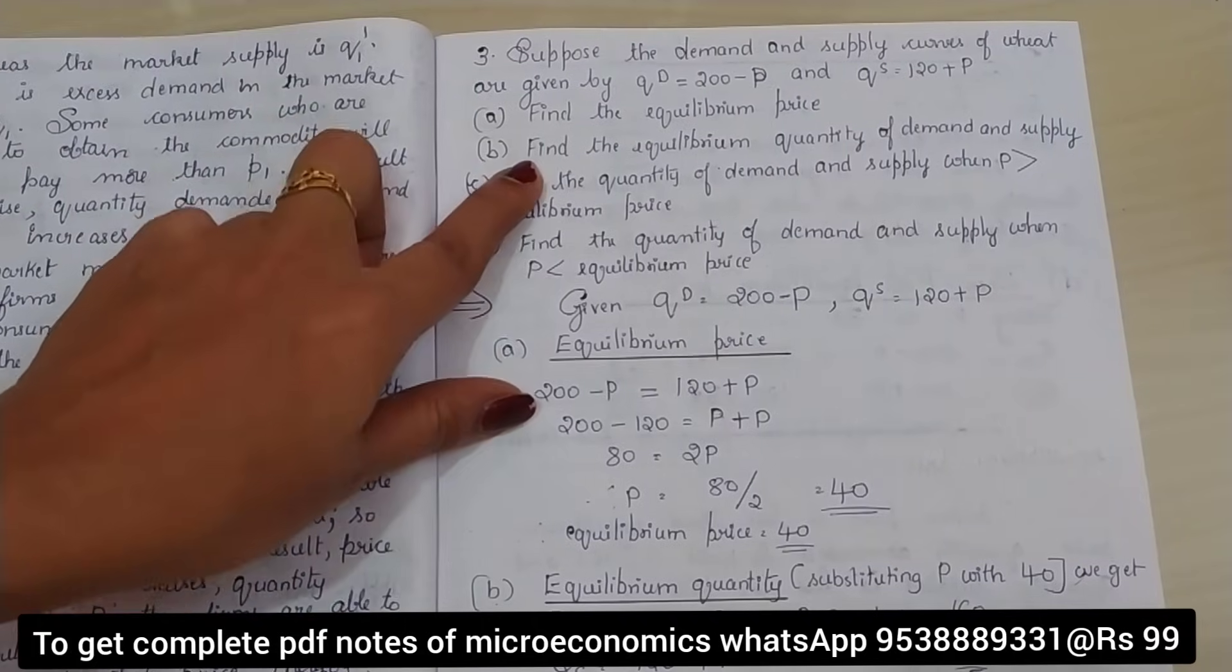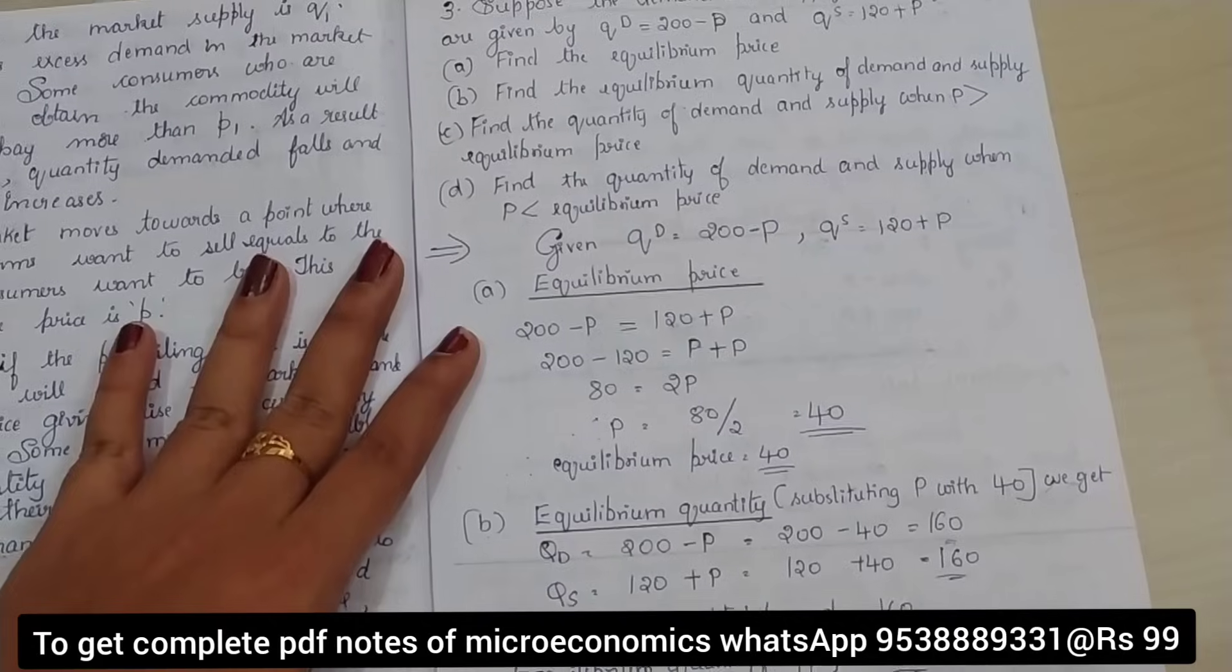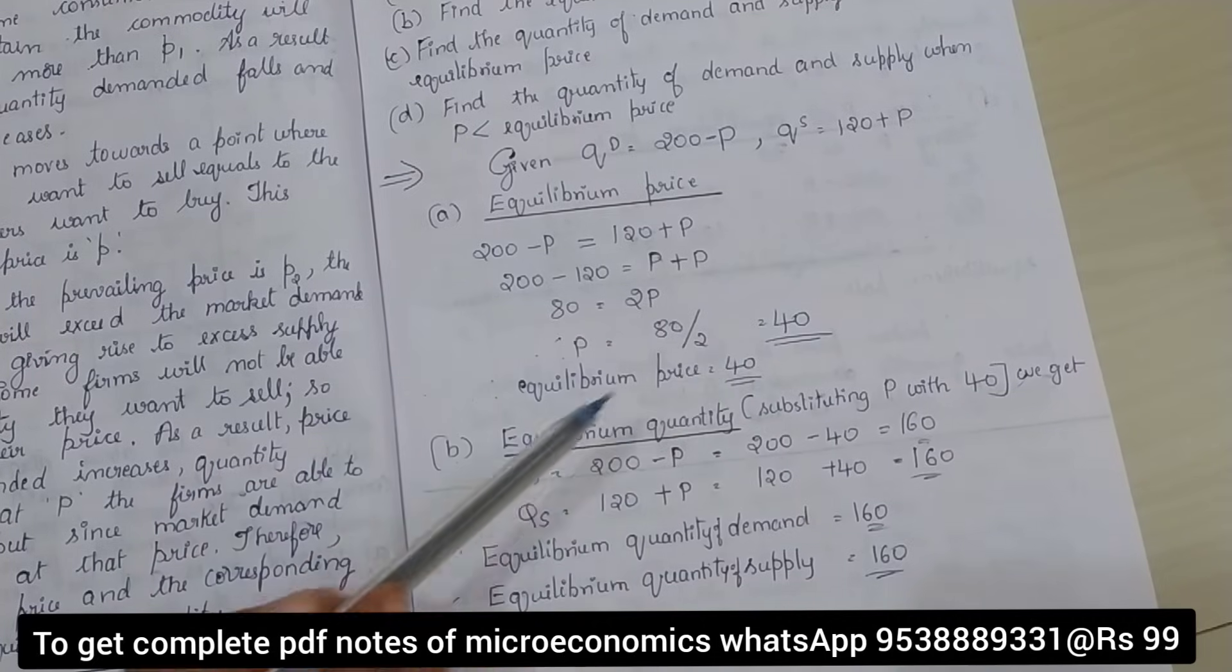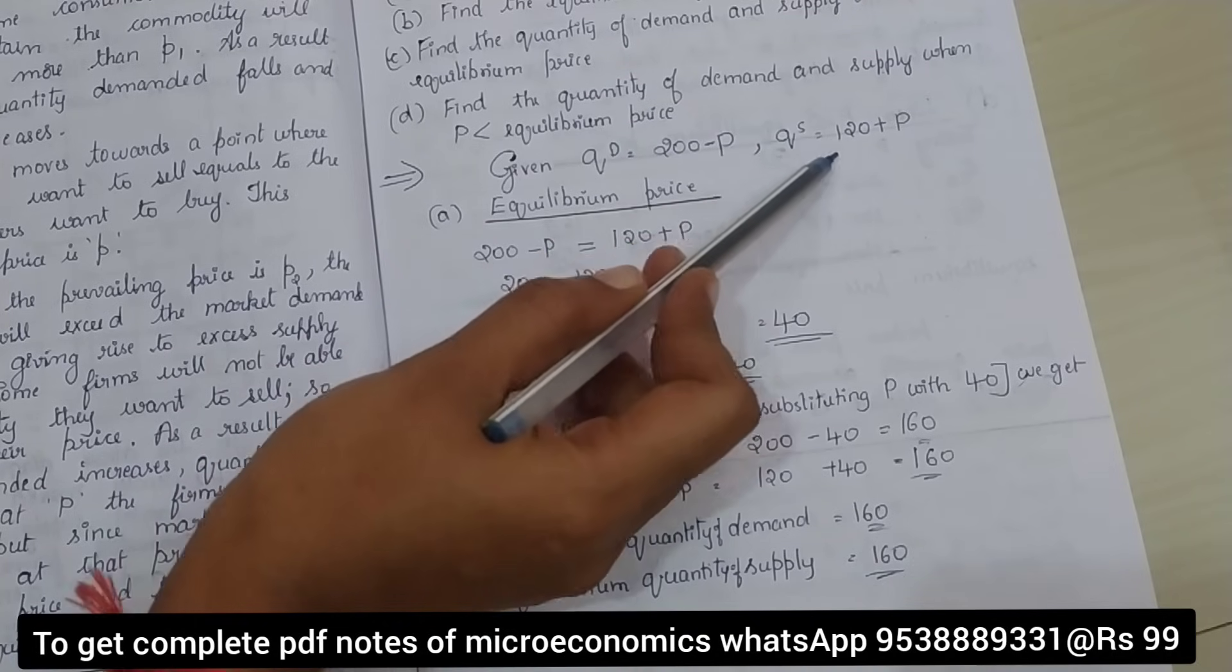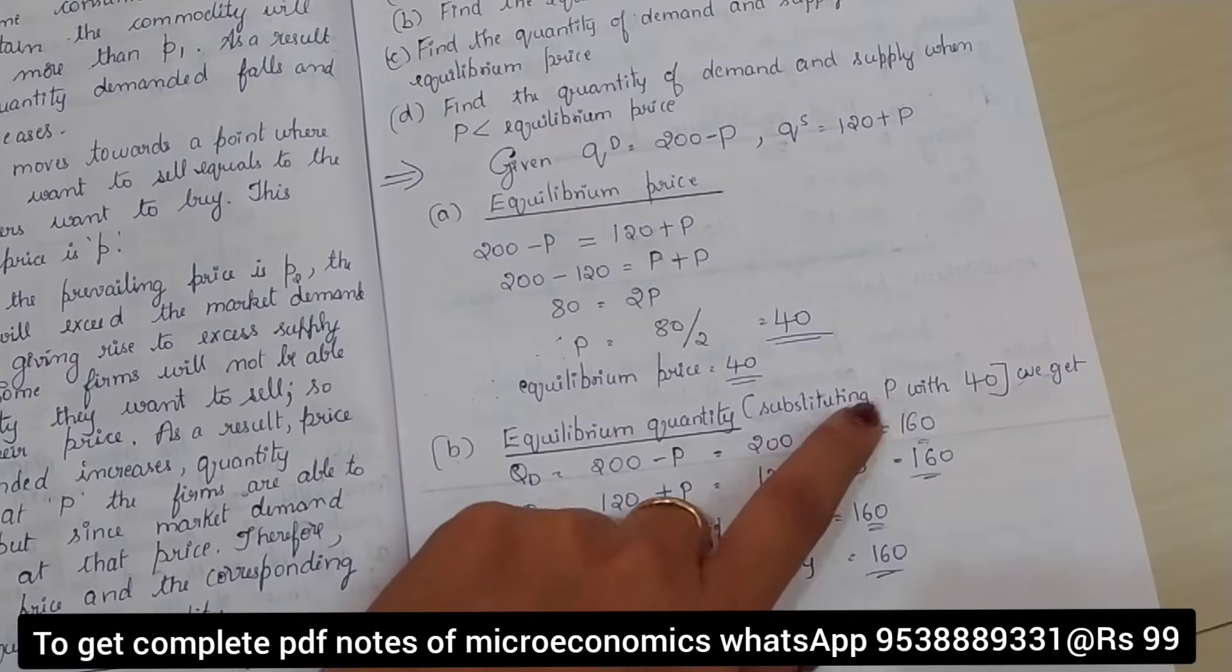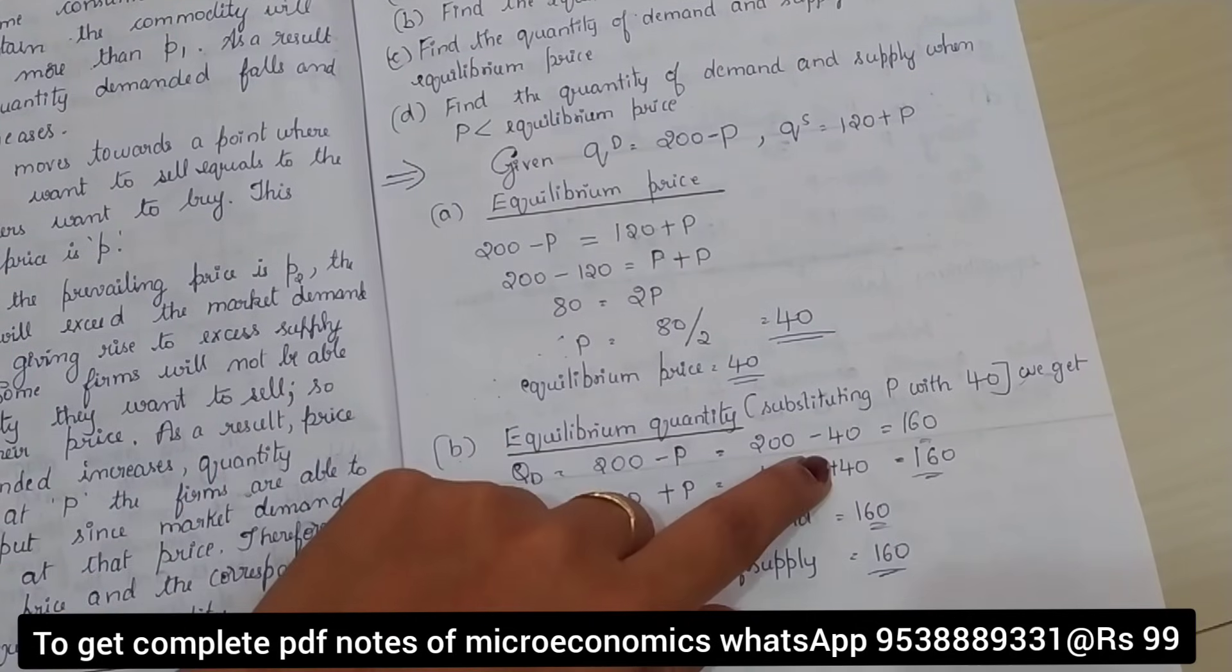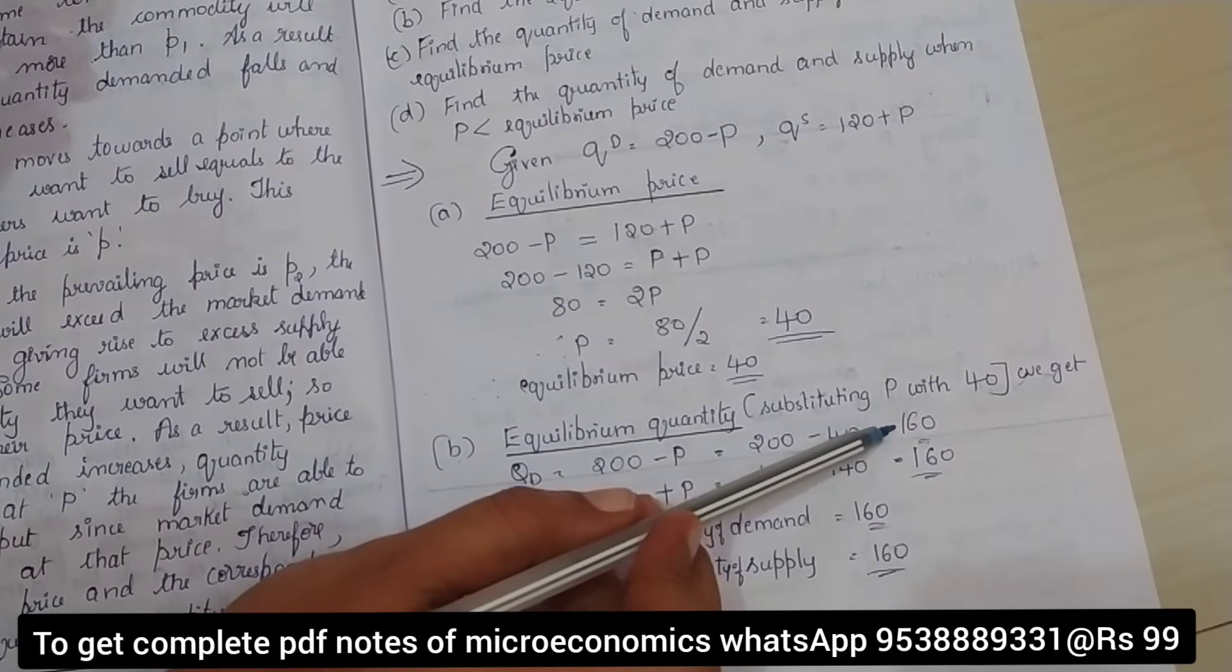Now what is the second question? Find the equilibrium quantity of demand and supply. Already equilibrium price we got from the first solution, that is 40. We know the equations: quantity demanded equation and quantity supplied equation. Just substitute the value. We get QD is equal to 200 minus 40. Therefore, quantity demanded becomes 160.